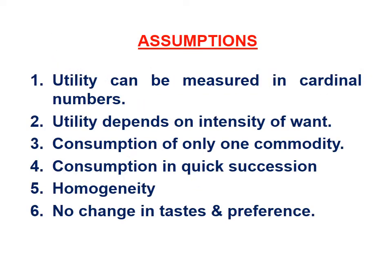Now let us see the assumptions on which the relationship between total utility and marginal utility is based. The first assumption is that utility can be measured in cardinal numbers — that is, 1, 2, 3, 4, and so on. So here we assume utility in cardinal numbers.